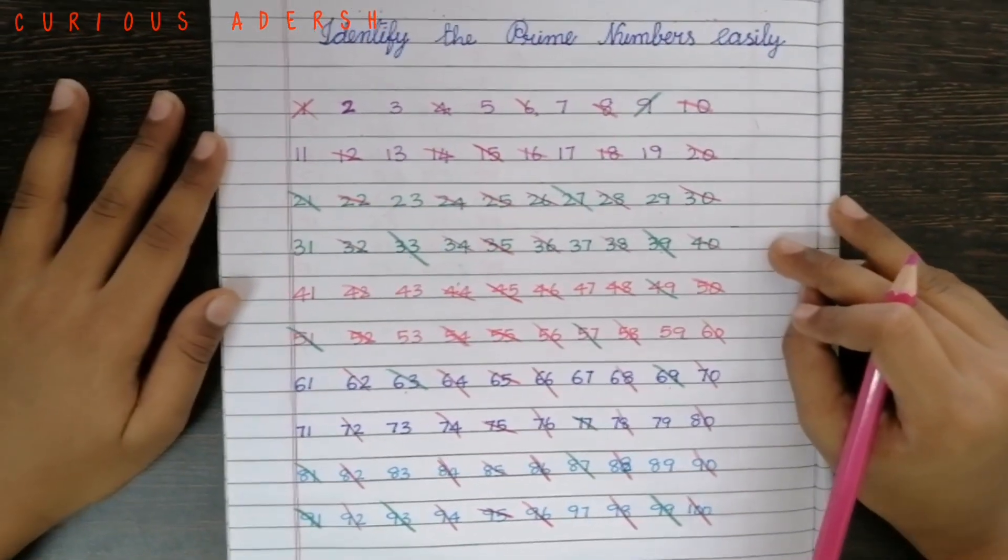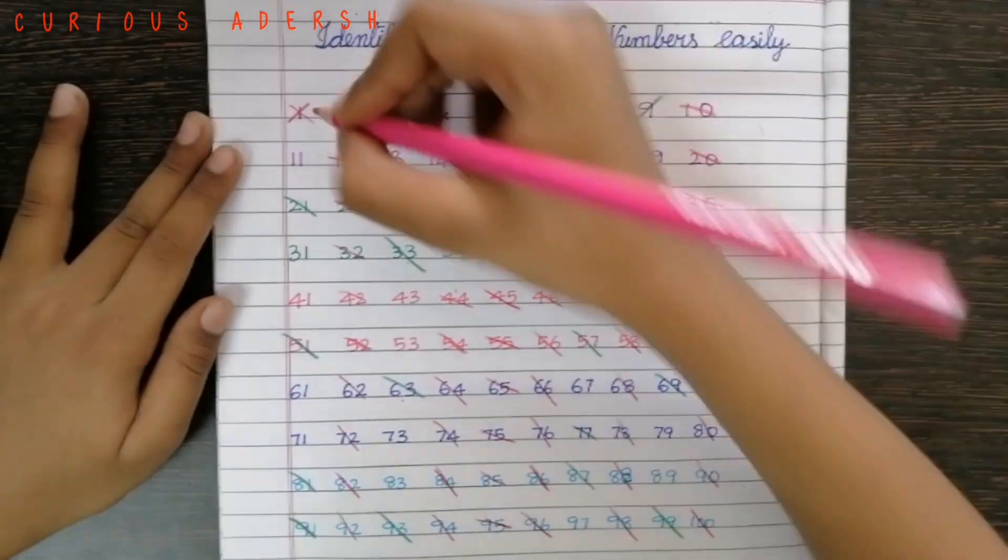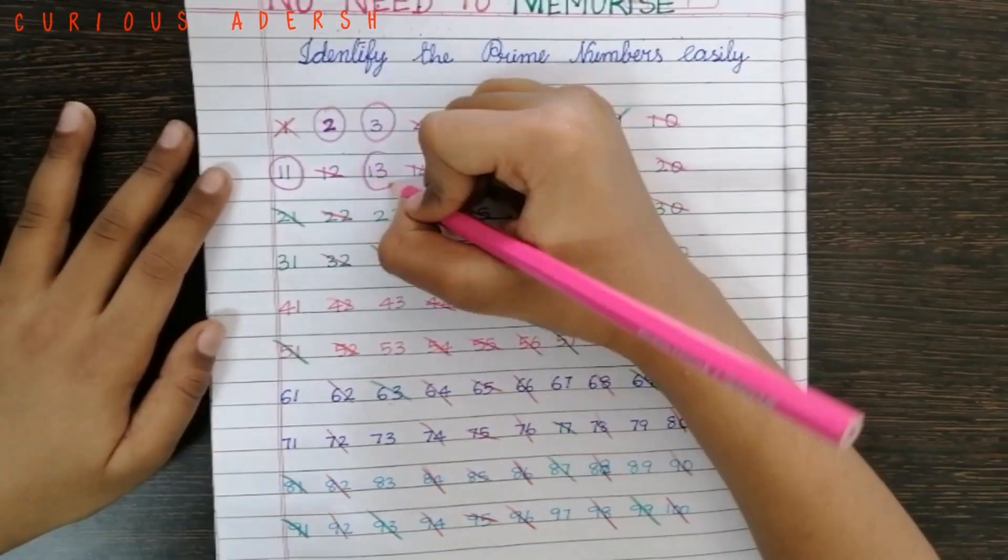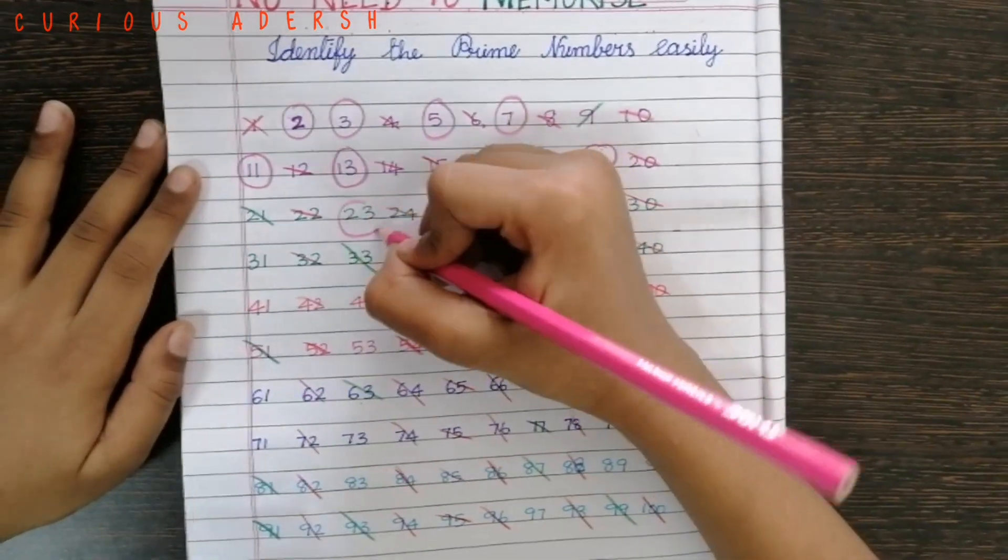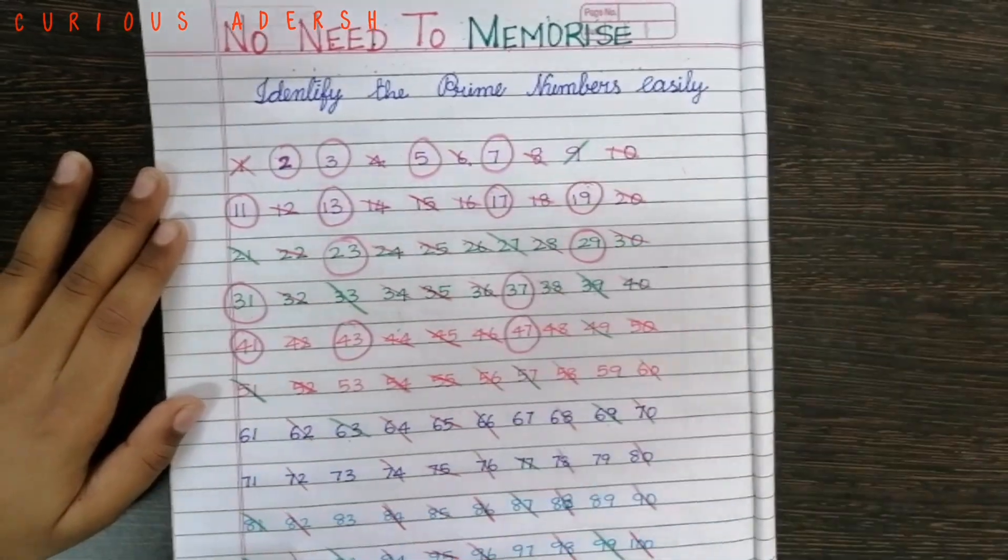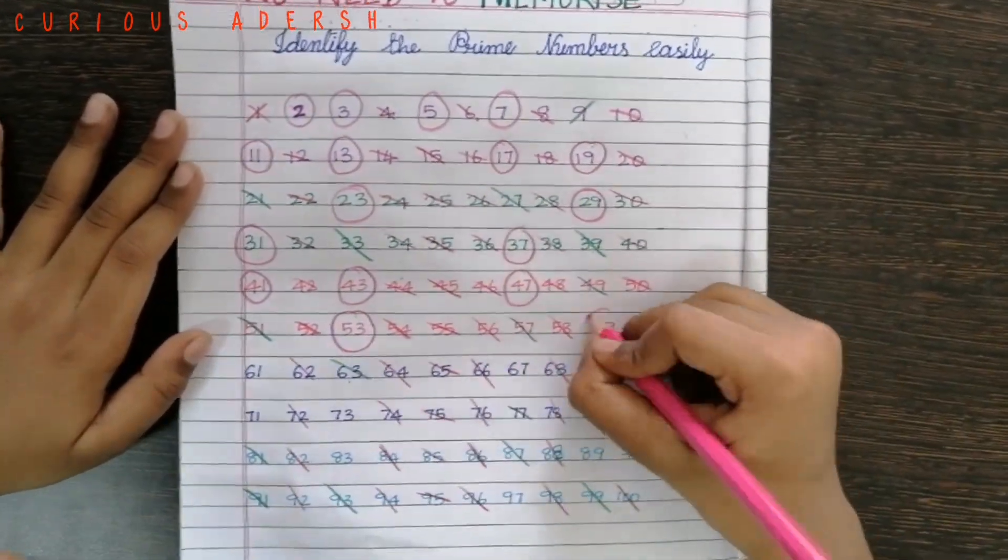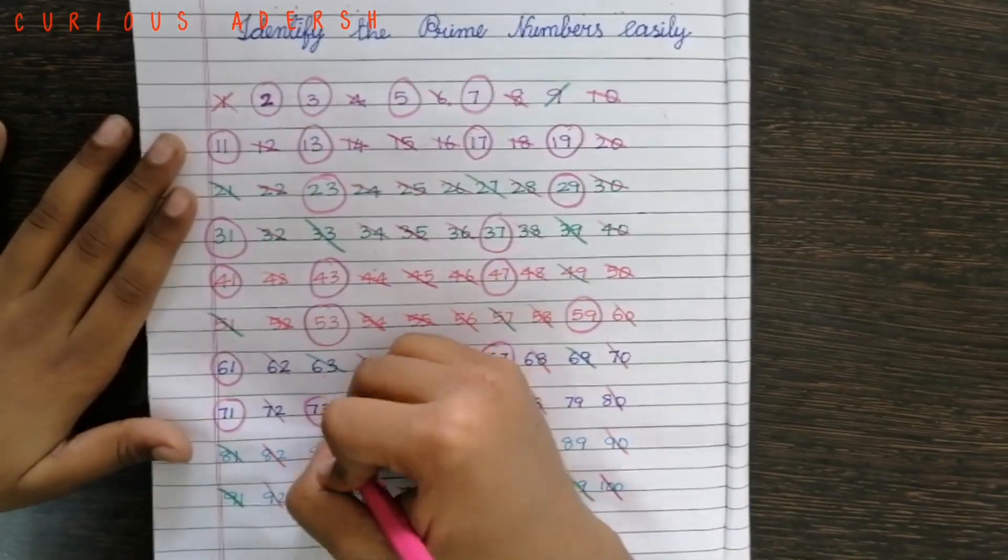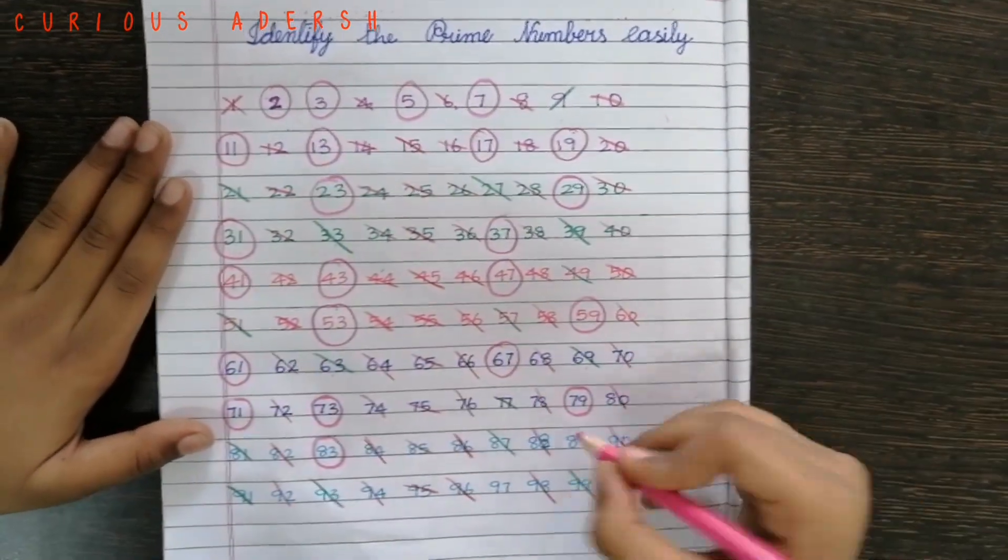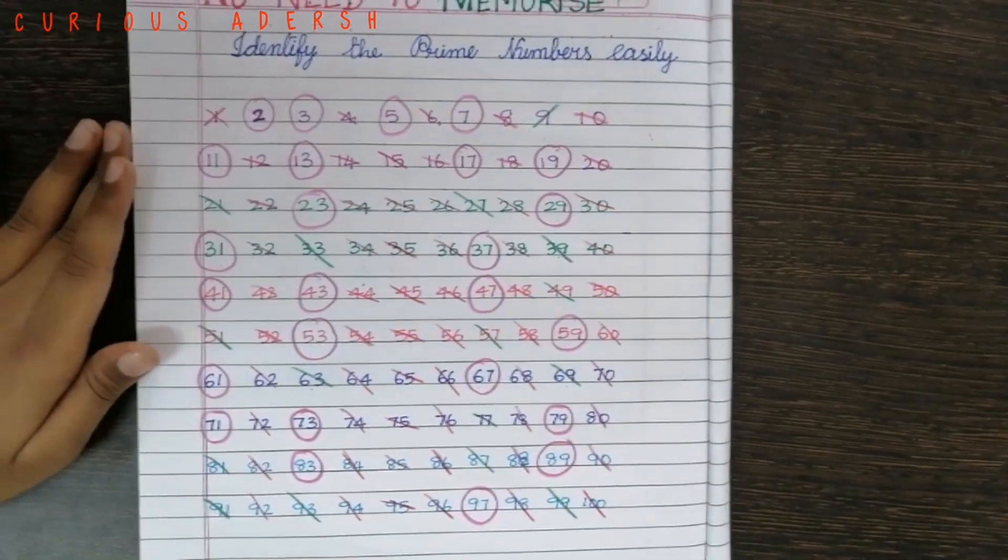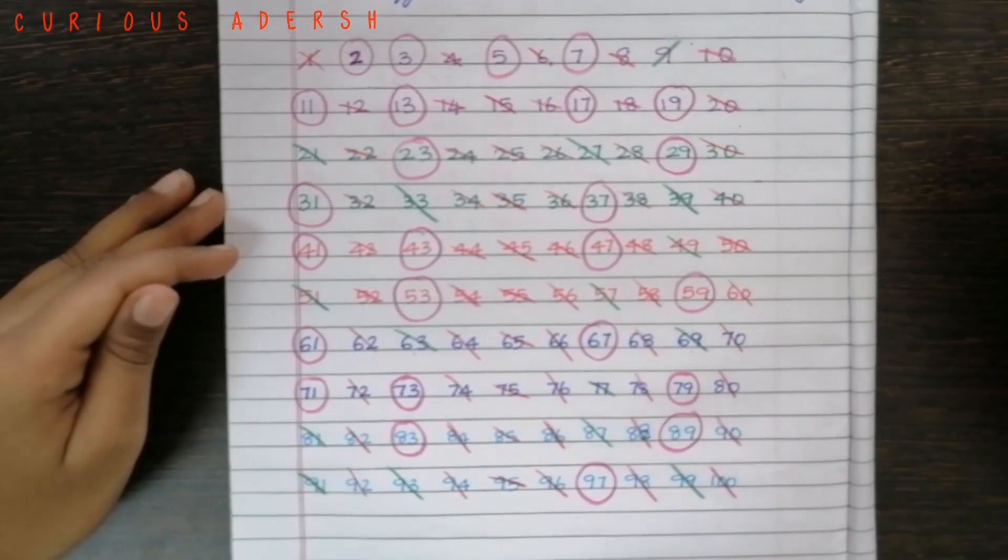The rest of the numbers are the prime numbers. Now let's match these with our secret code.